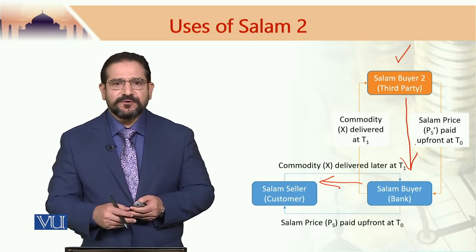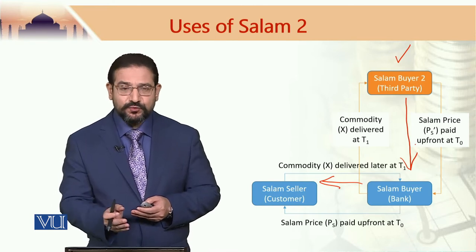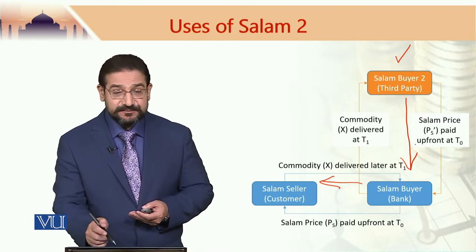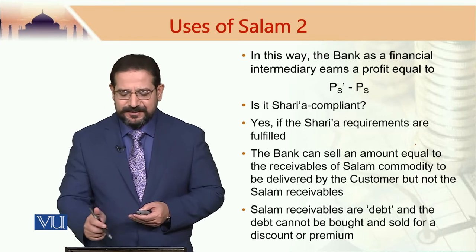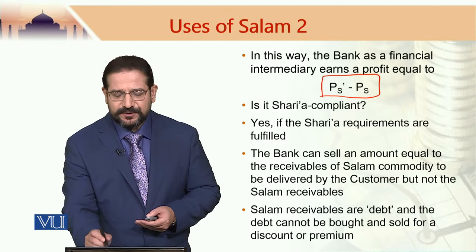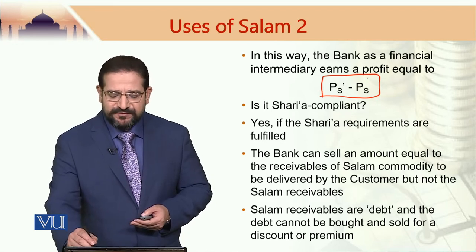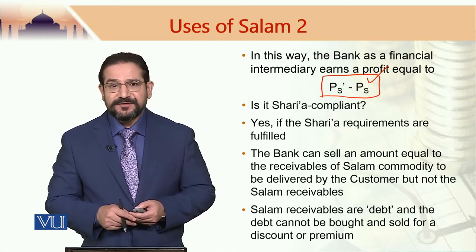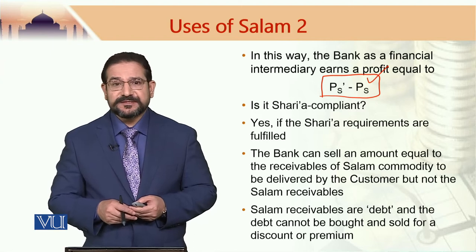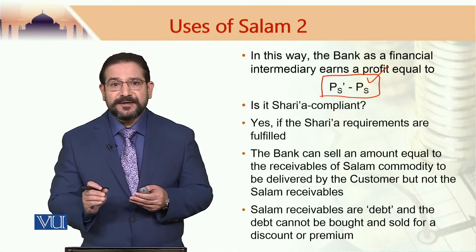Why would this make sense for the bank? If the bank is receiving a price and then paying it to salam seller 1, what is the benefit for the bank? The bank would be benefiting if there is a price differential between the two salam prices. If the salam price paid to the farmers is less than the salam price paid by the third party to the bank, then this would make sense for the bank, because the bank would be making a profit equal to PS prime minus PS.